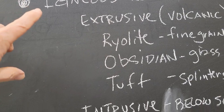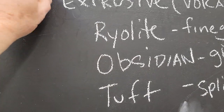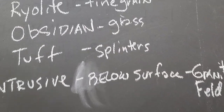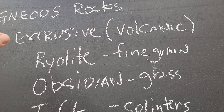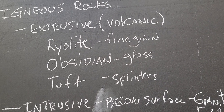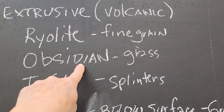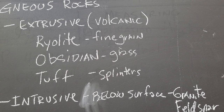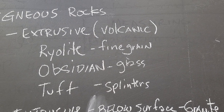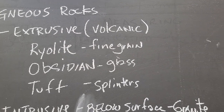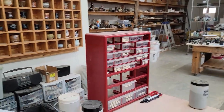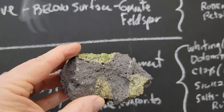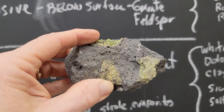For igneous rocks we have two types. We have extrusive, which means it's volcanic — it comes out of the ground. And we have intrusive, which means it's below the surface. For extrusive volcanic rocks, you're going to have an eruption producing basalt, or if it cools very quickly it's going to be obsidian, which is like a basalt in glass form. Then you're going to have tuff, which is when it explodes upward making splinters of material into the air in an explosive way. This is an example of basalt — as it sits in the ground it cools slowly enough to form crystals. Those are olivine crystals.